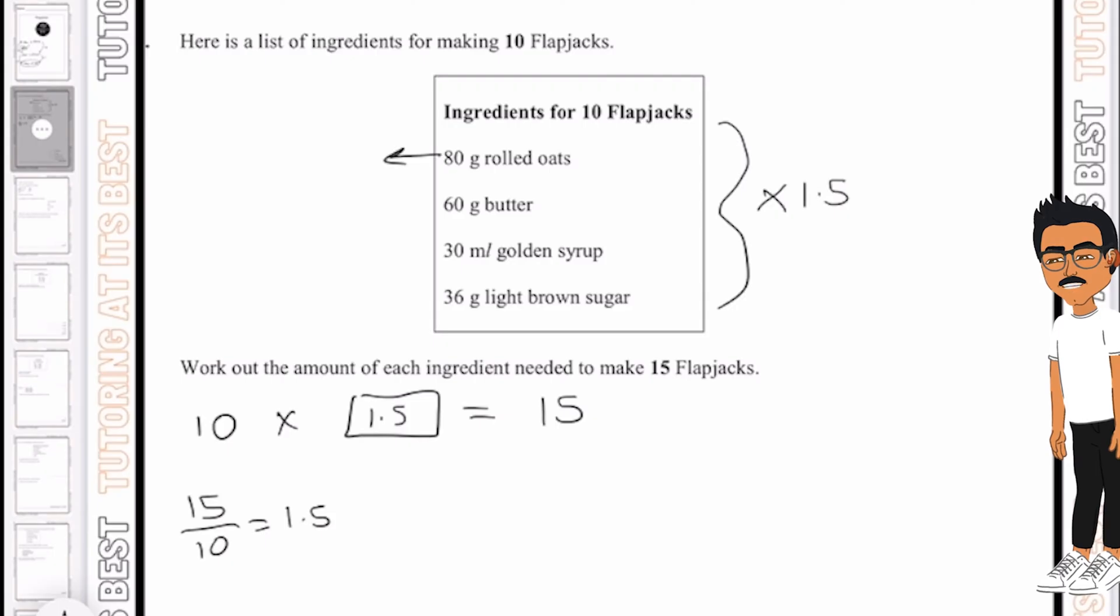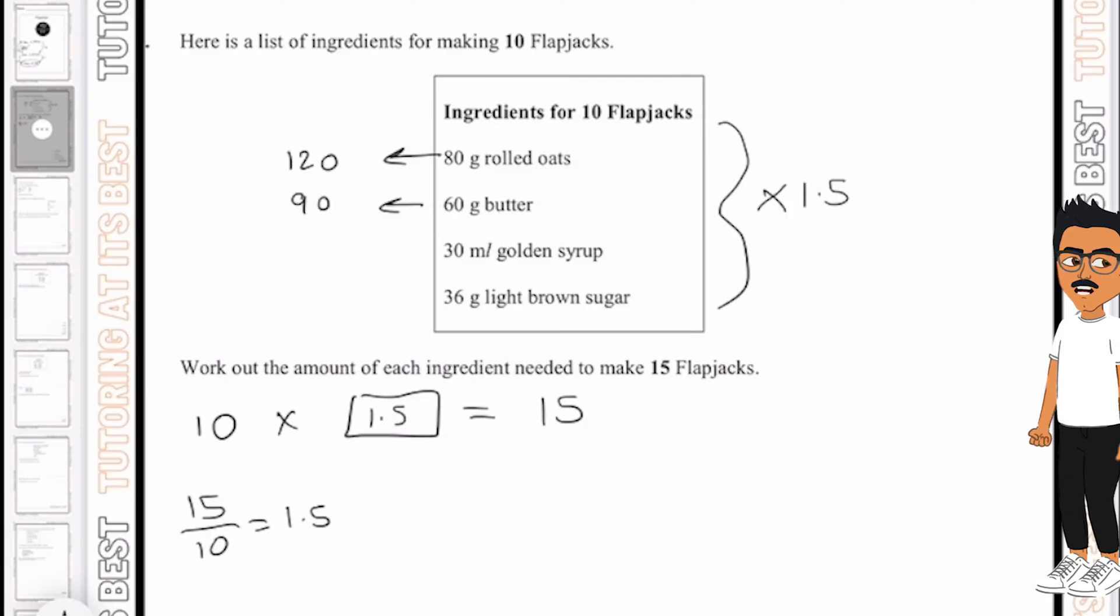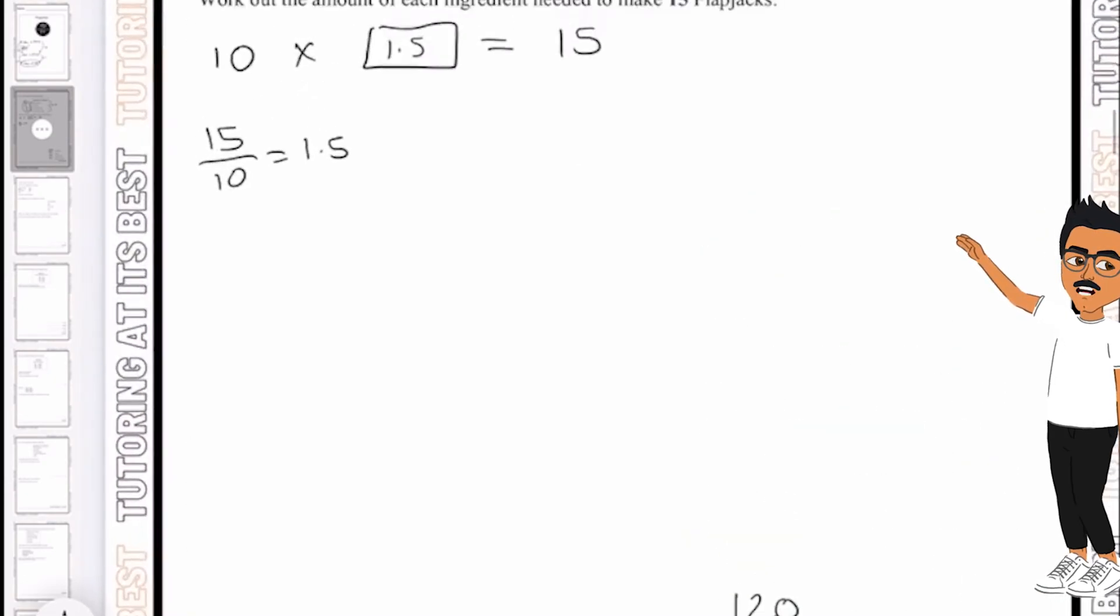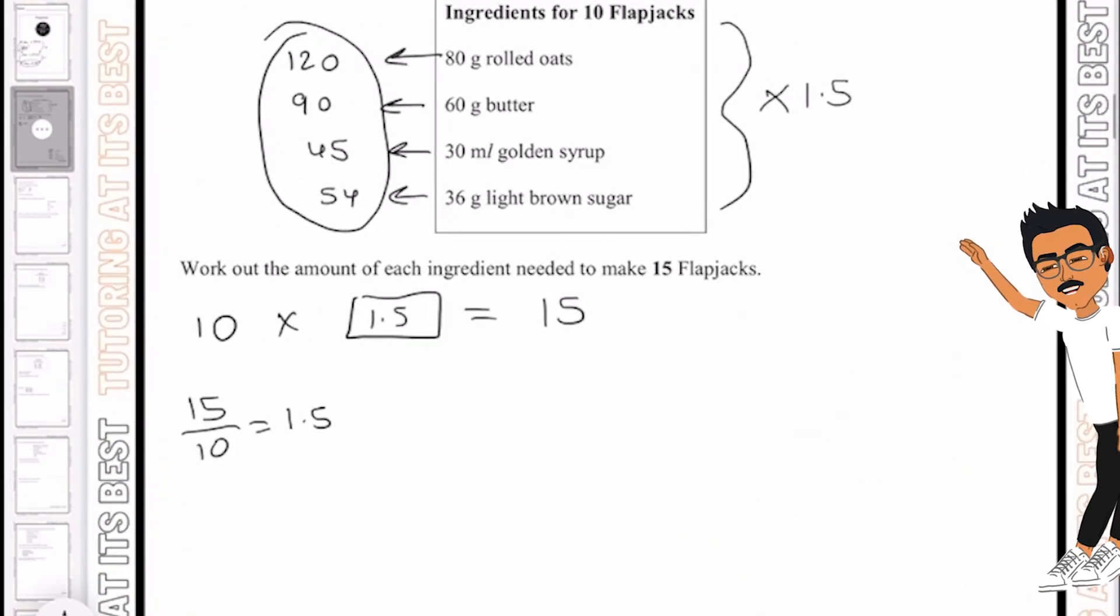So we know 80 times 1.5 is 120. We know 60 times 1.5 is 90. 30 times 1.5 is 45, and 36 times 1.5 is 54. So if I write this out at the bottom we have 120 grams, 90 grams, 45 milliliters and 54 grams. And that's all you would need to do.